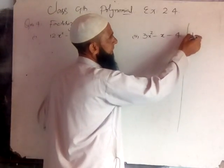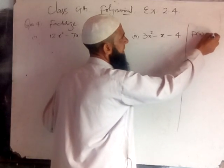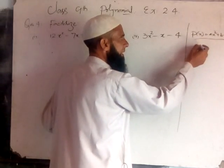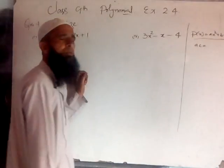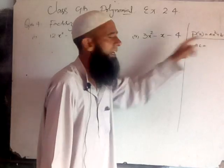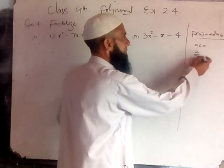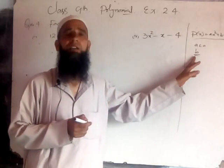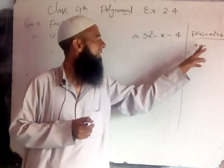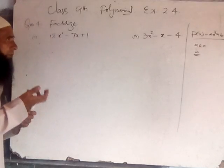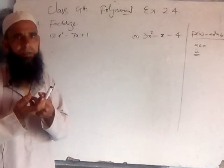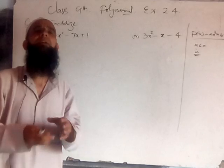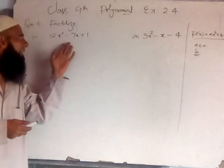A quadratic polynomial P(x) is equal to ax² + bx + c. Here AC is the product of the coefficient of x² and the constant term. By the method of splitting the middle term, we have to find two parts such that their sum becomes B and their product becomes AC.